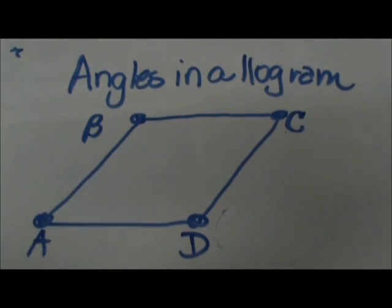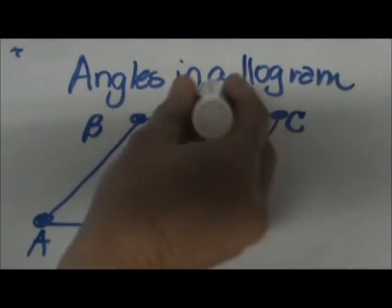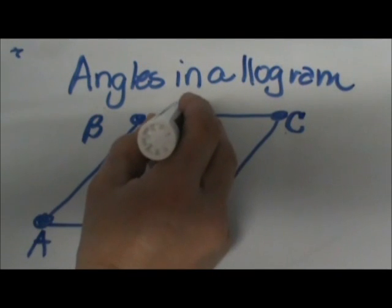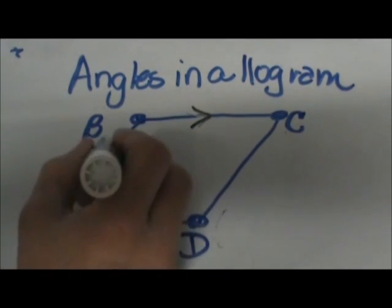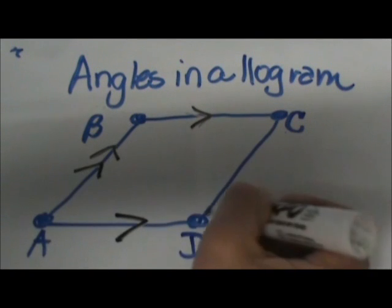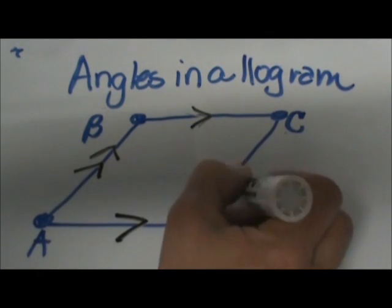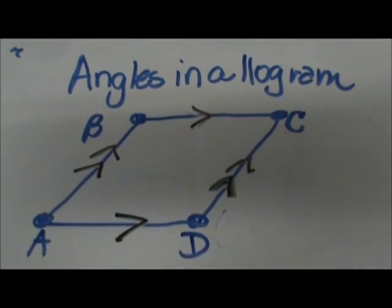First of all we need to know what is a parallelogram. A parallelogram is a quadrilateral, meaning a polygon with four sides where the opposite sides are parallel. We have the top parallel to the bottom. BC is parallel to AD and AB is parallel to DC. That is the main property in what defines a parallelogram.